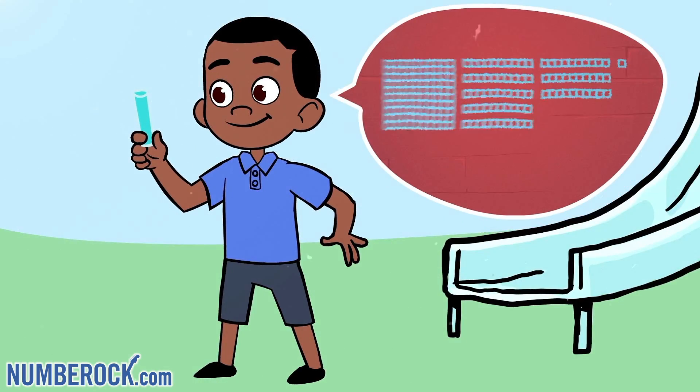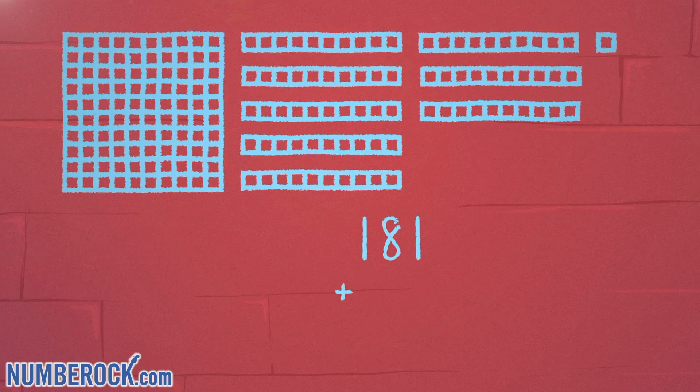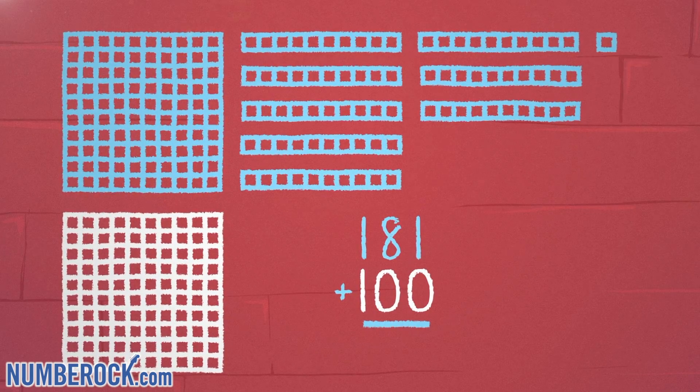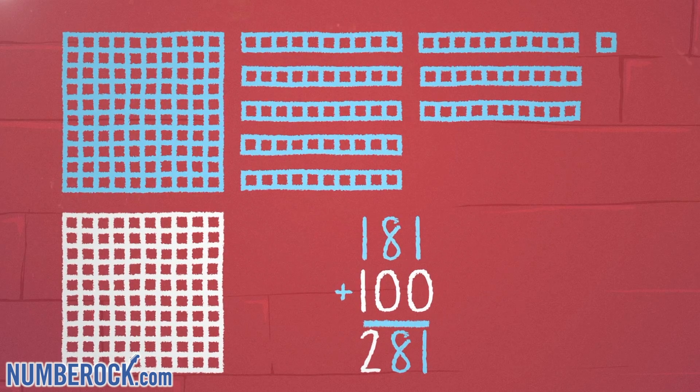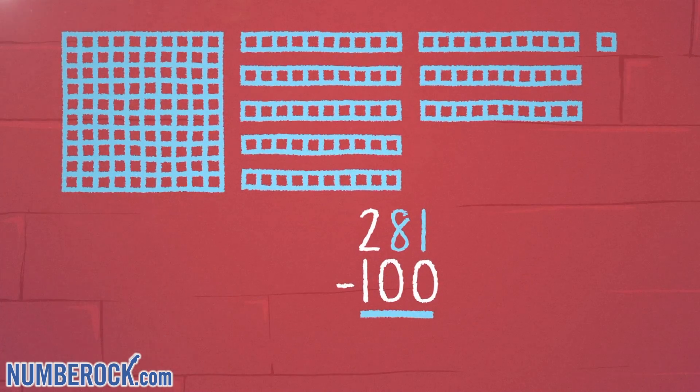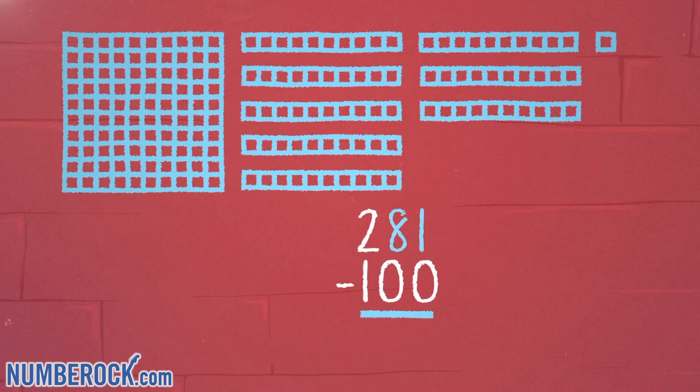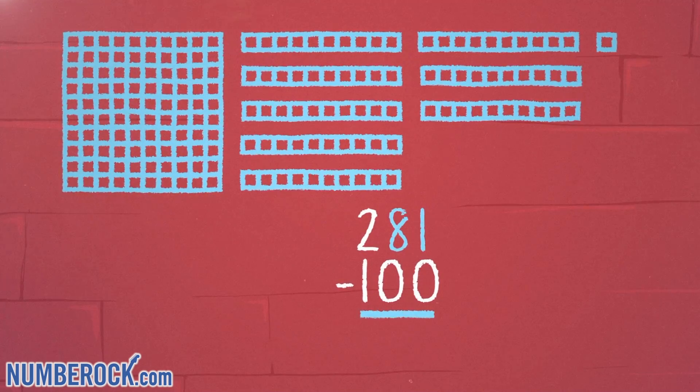Now I'm imagining adding 100 instead. In my mind I can see another 100. And in my thoughts I see the sum would be 281. And if I subtract 100 from that sum, the difference will become the original number, 181.